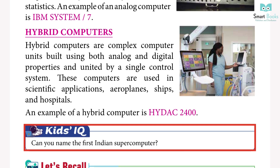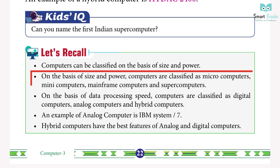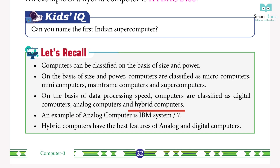Let's recall: computers can be classified on the basis of size and power as microcomputers, minicomputers, mainframe computers, and supercomputers. On the basis of data processing speed, computers are classified as digital computers, analog computers, and hybrid computers. An example of an analog computer is the IBM System/7.